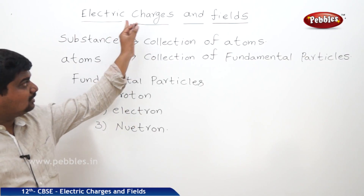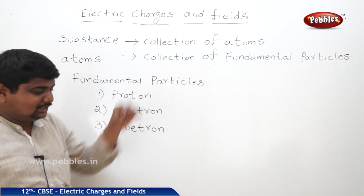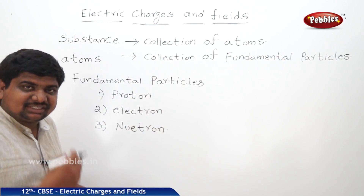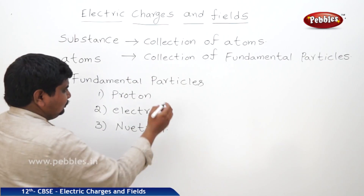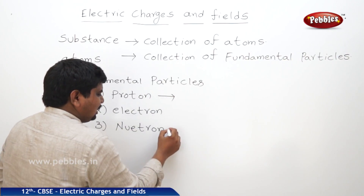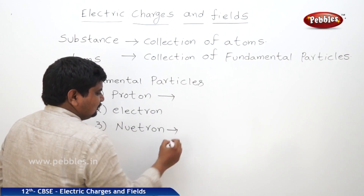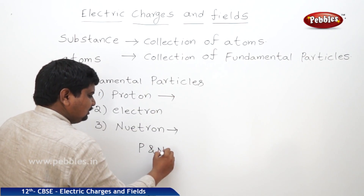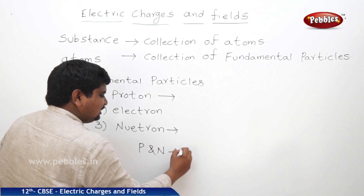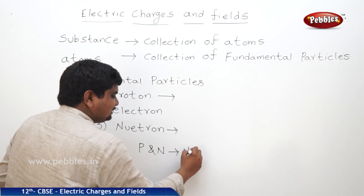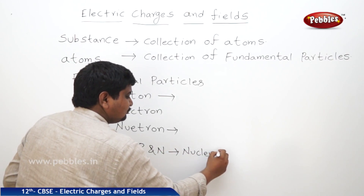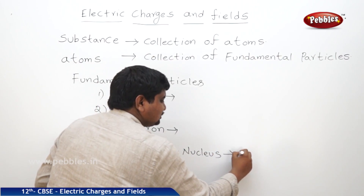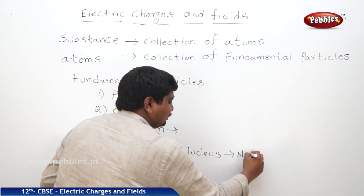Before going to discuss about the main content, we should know some of the basics of atomic structure. We know that proton and neutron exist in the nucleus — that's why these two are called nucleons.